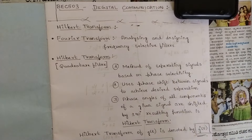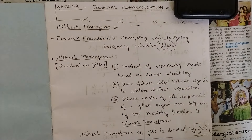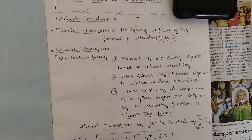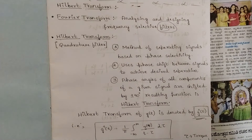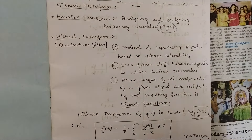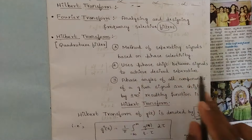Fourier Transform is used for analyzing and designing frequency selective filters. Filters means removing unwanted frequency components present in a circuit — to keep the circuit in a stable state. Now, Hilbert Transform is a method of separating signals based on their phase selectivity. Whatever signals are generated, we separate them in accordance with their phase.